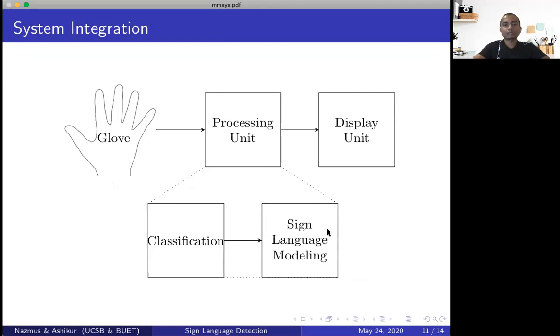So this is what our final system looks like. We have a designed glove. Our processing unit collects data from our glove at a certain sampling rate. Once it has data, it forwards this data to the classification unit. The classification unit predicts a letter and it forwards it to the sign language modeling unit. And finally, this unit decides what to display in our display unit. So the processing unit can be a simple microcontroller. It can be our personal computer. Similarly, a display unit can be our personal computer. We can also display the letters in our smartphone using a Bluetooth module. So it can also be a simple LCD module. So we have a lot of options here.